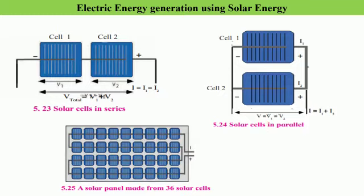Thus, if we want to increase both the total potential difference and the current in photovoltaic cells, we need to connect many solar cells in series and parallel combination. By connecting many solar cells in series and parallel combination, we get a solar panel, and such a solar panel helps us generate the current and potential difference that are required.